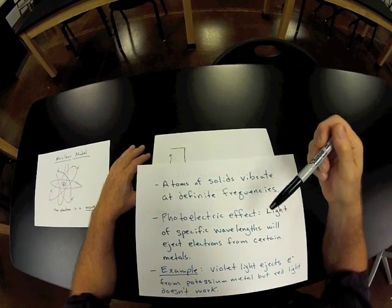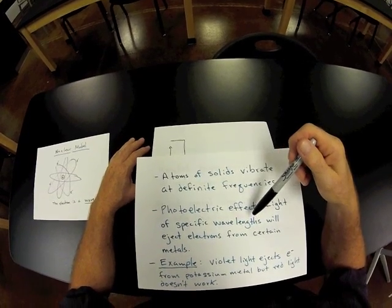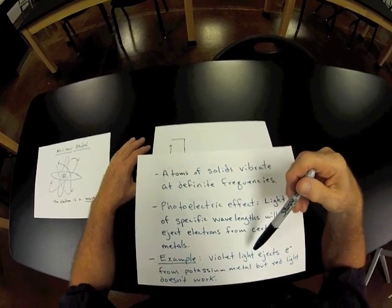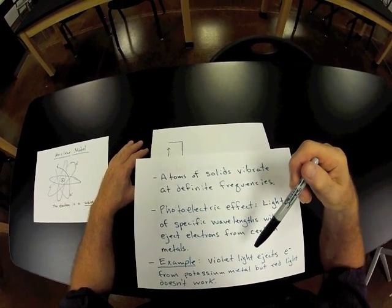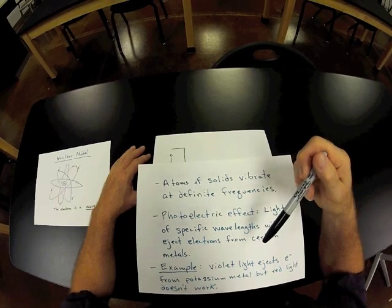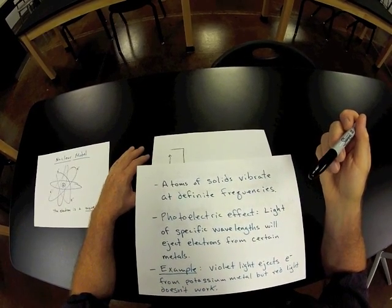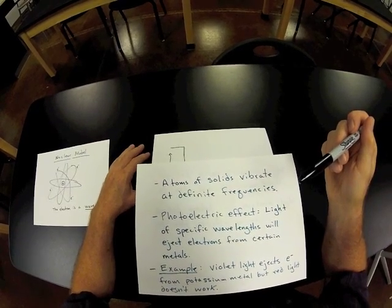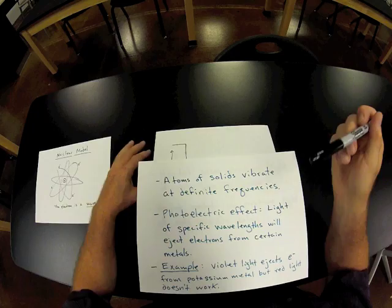But the light wave used is specific to a specific kind of metal. An example of this is that electrons can be ejected from potassium with violet light, but light with wavelengths that correlate in the red part of the visible spectrum have no effect.